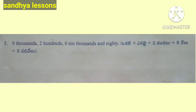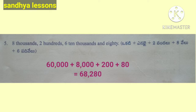Fifth: 8 thousands, 2 hundreds, 6 ten-thousands, and 80 ones gives 60,000 + 8,000 + 200 + 80 = 68,280.